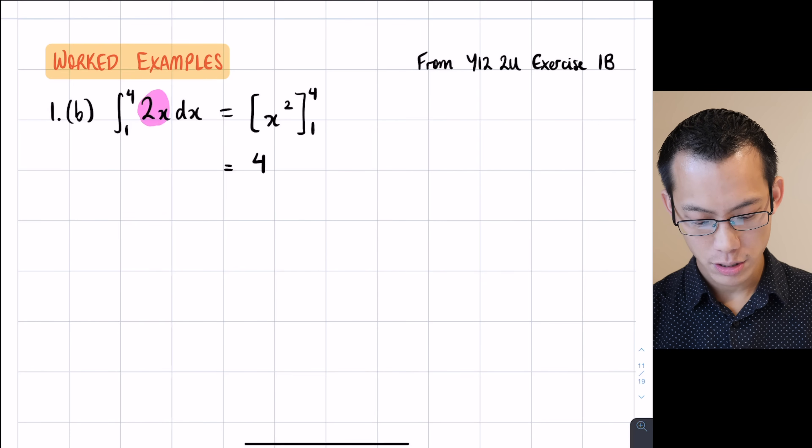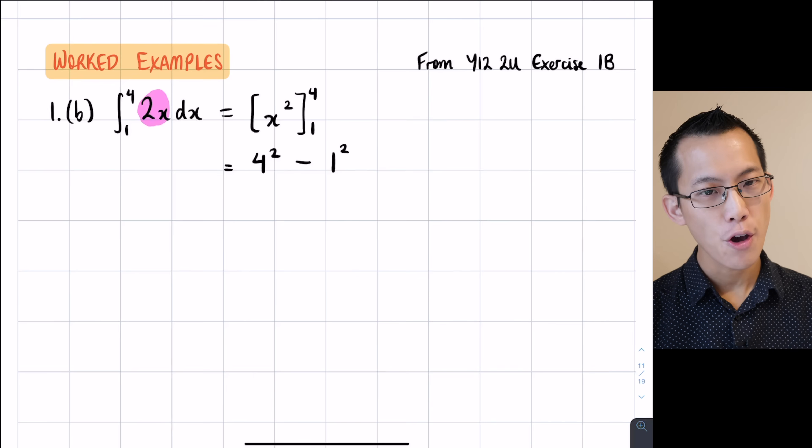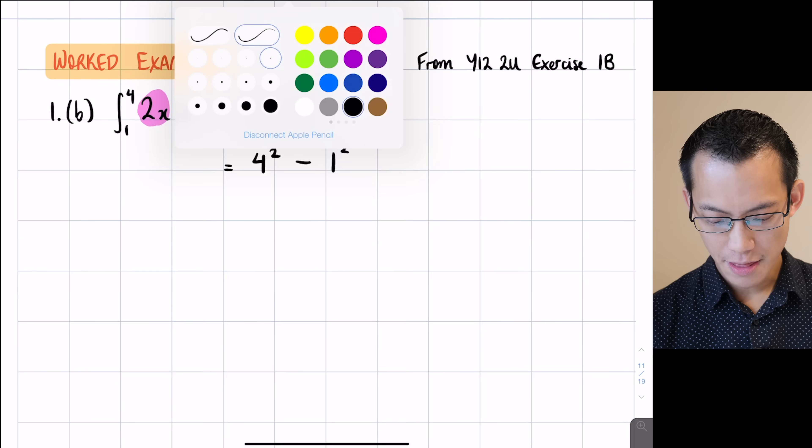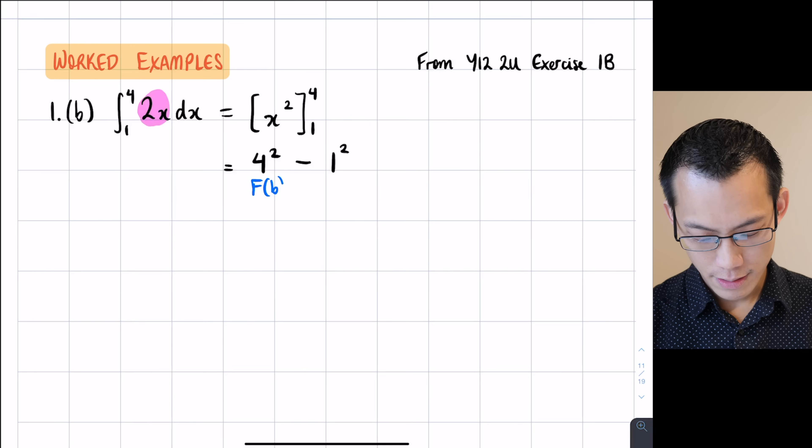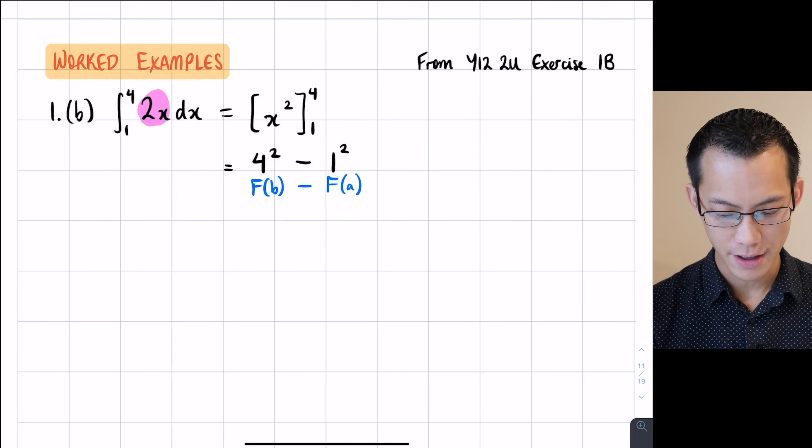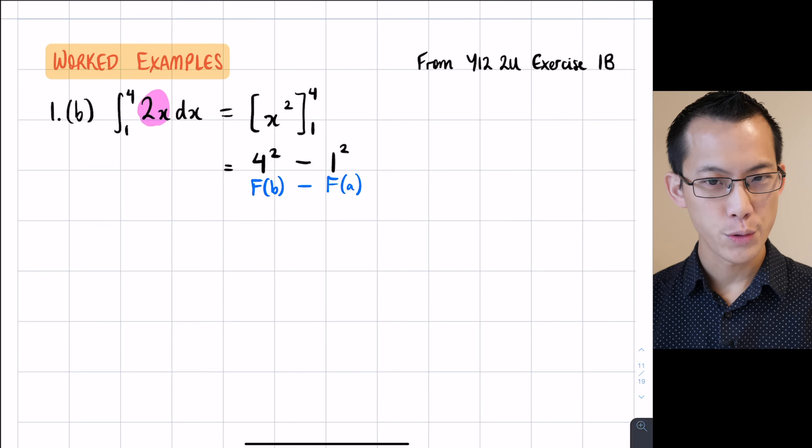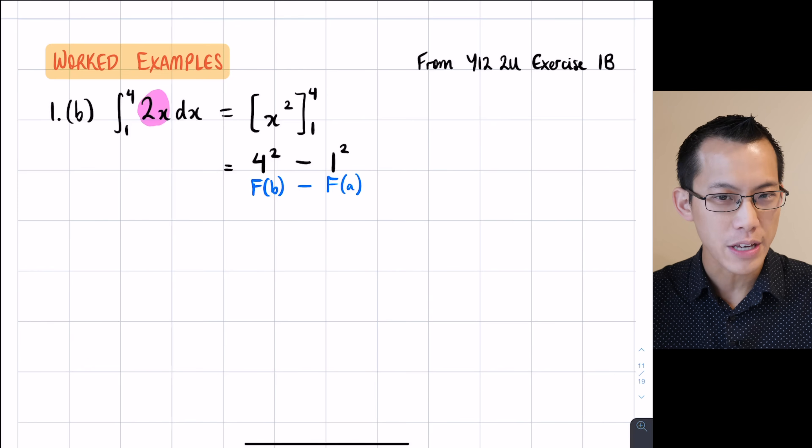And what they indicate is I'm going to evaluate the end point, which is 4, and I'm going to subtract that from evaluating the start point, which is 1. So that's going to look like this: 4 squared take away 1 squared. If you go back to the fundamental theorem of calculus, this is the f(b) take away the f(a).